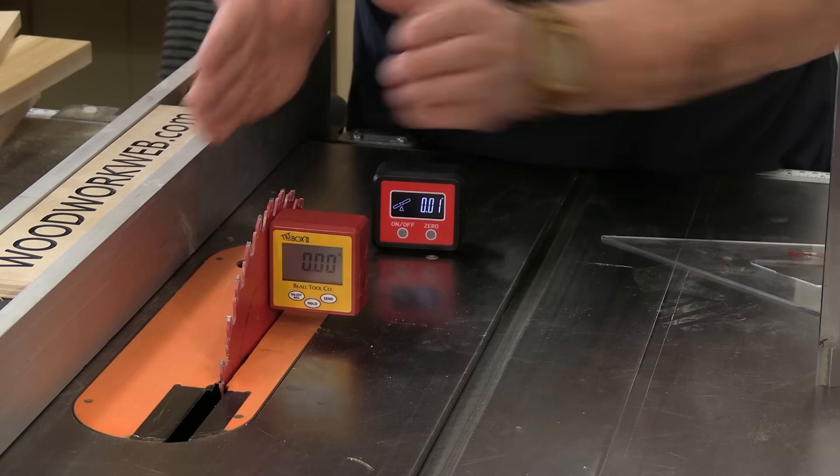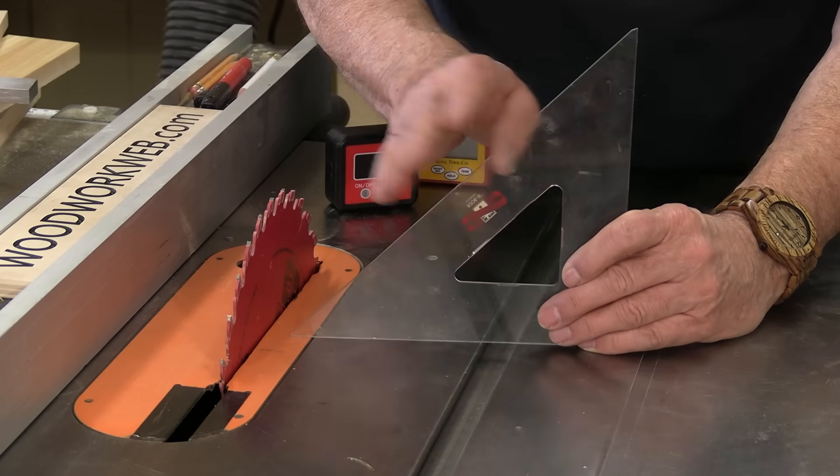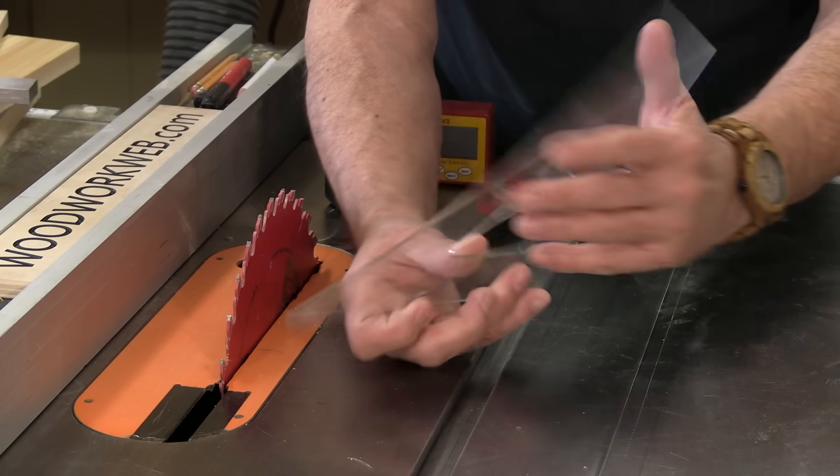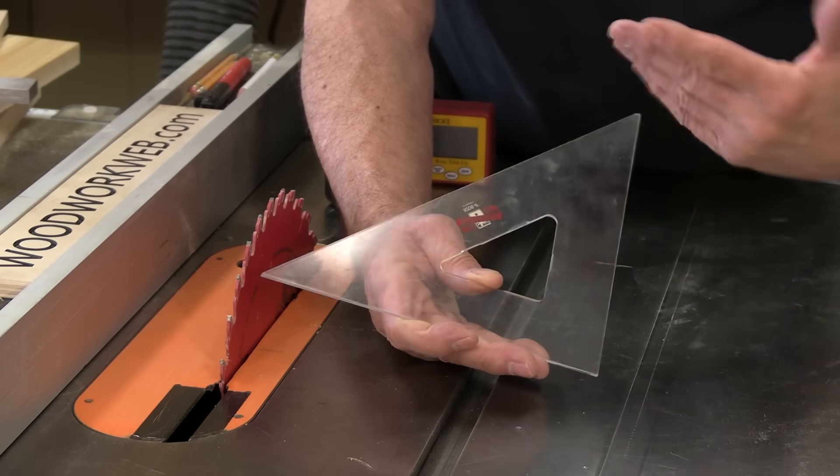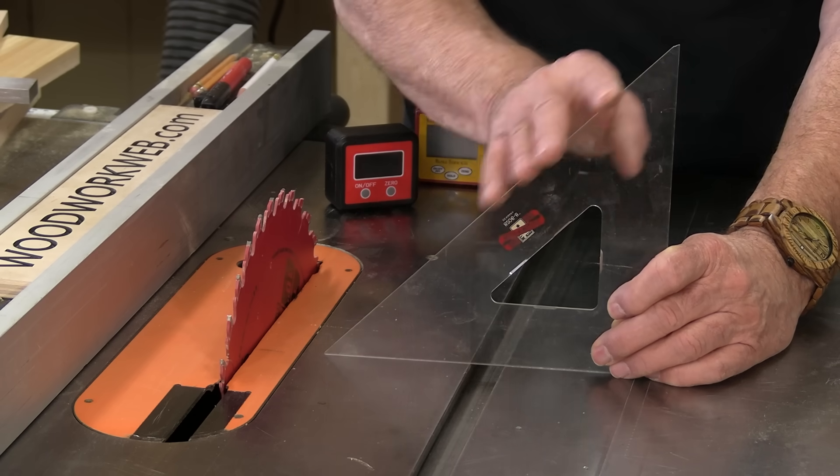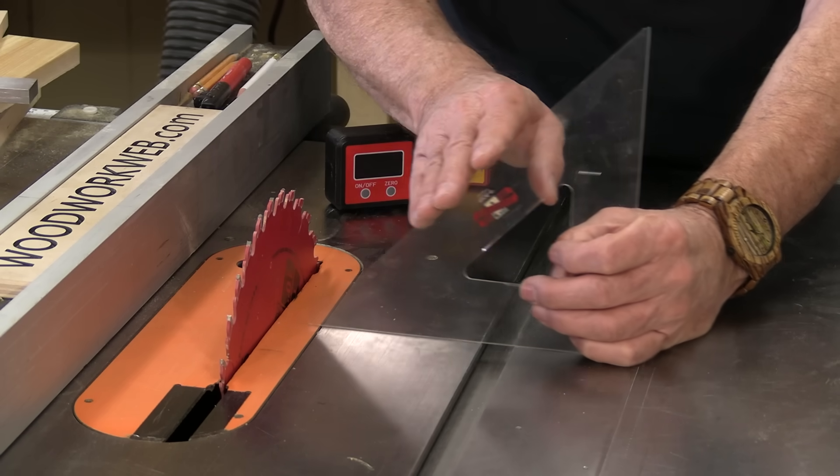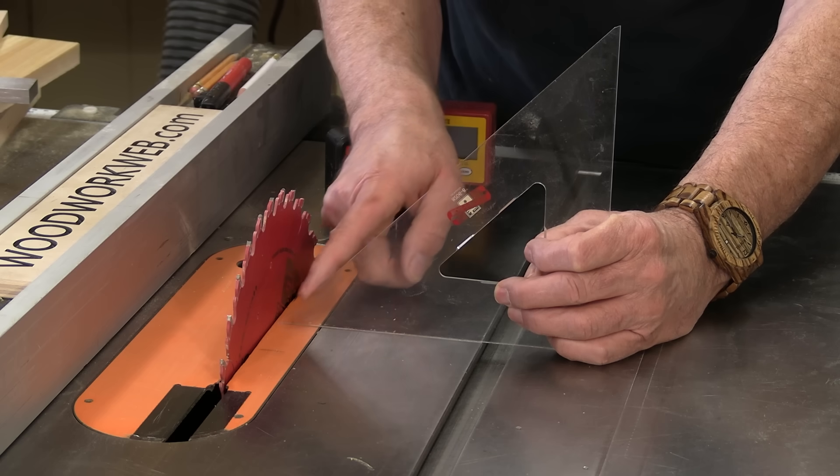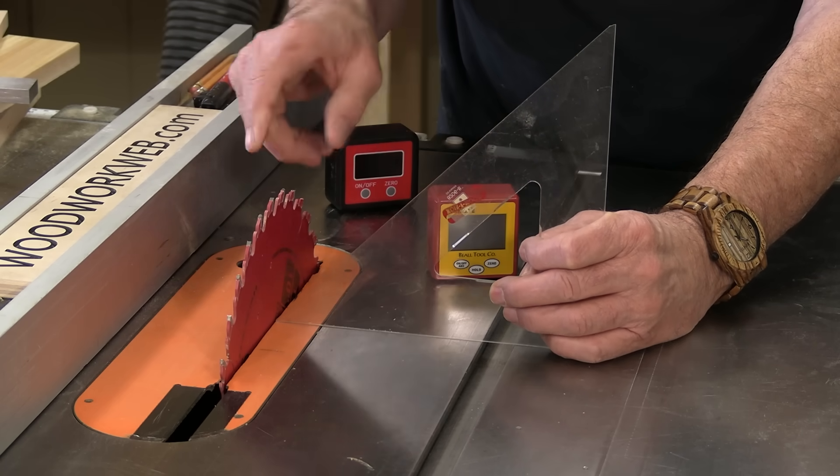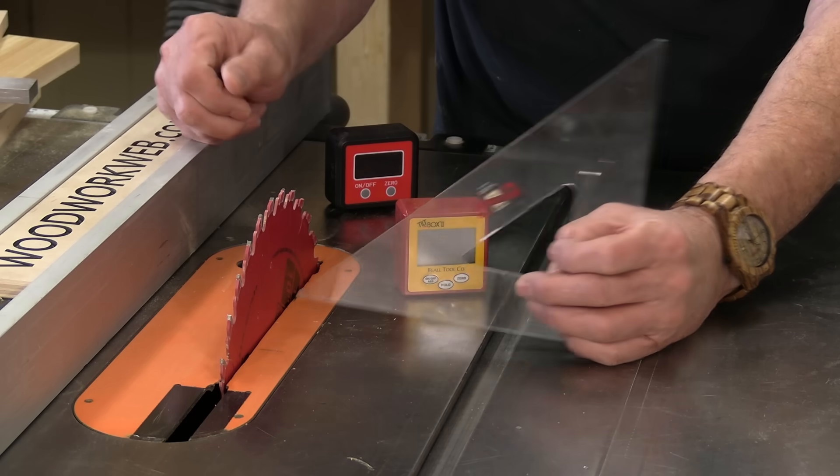But for setting up the blade vertically, that is easily your best choice. I forgot to mention too, the same is true for 45 degrees. If you have one of these, they call them engineer squares, drafting squares, or drafting triangles. This is a 45 degree. They're relatively inexpensive and they're dead accurate. And if you're setting up a 45 degree angle, this is far quicker and at least as accurate as any of these tilt boxes. But everything between 90 and 45, that's where these come in super handy.